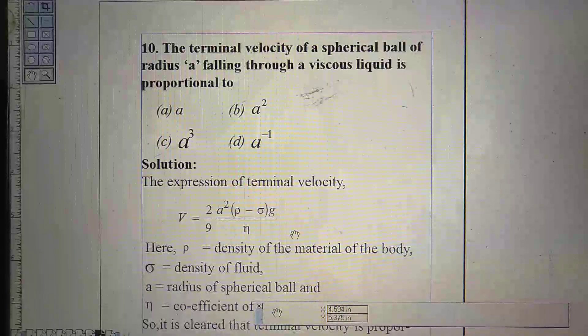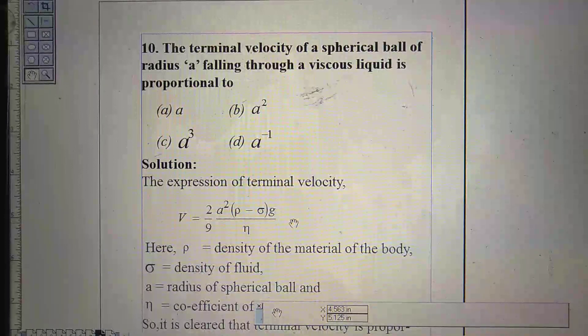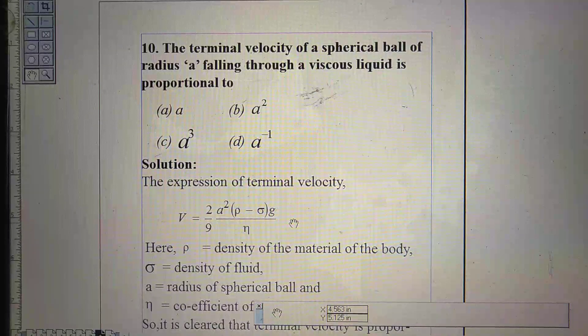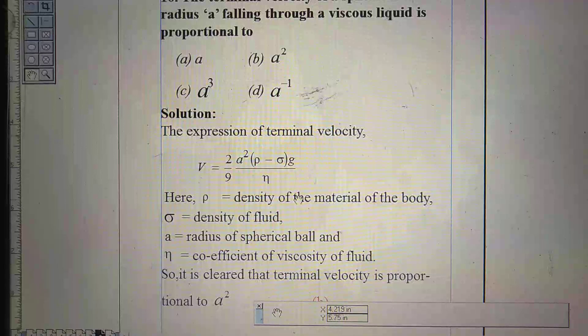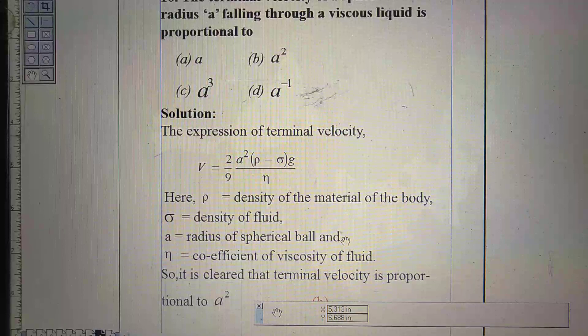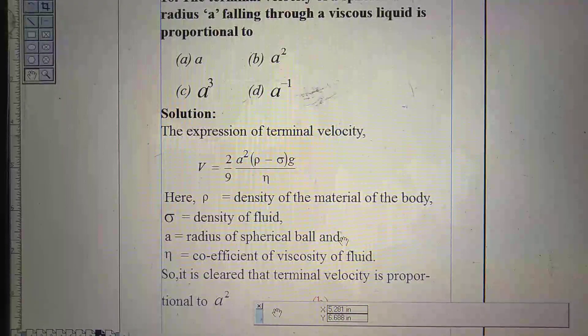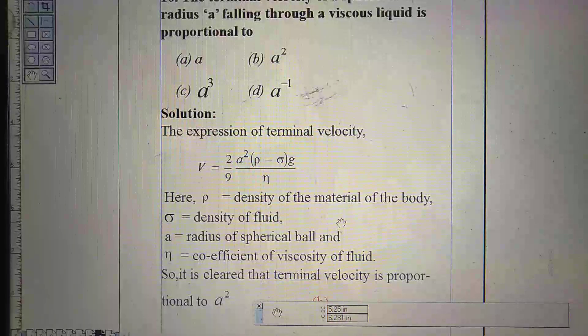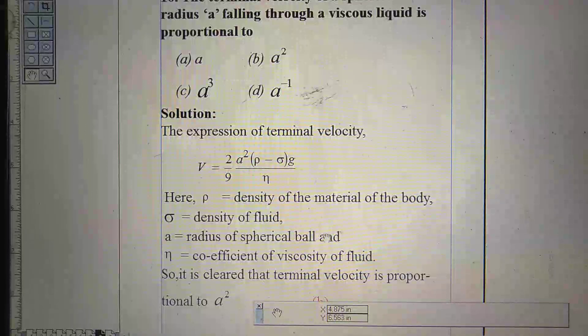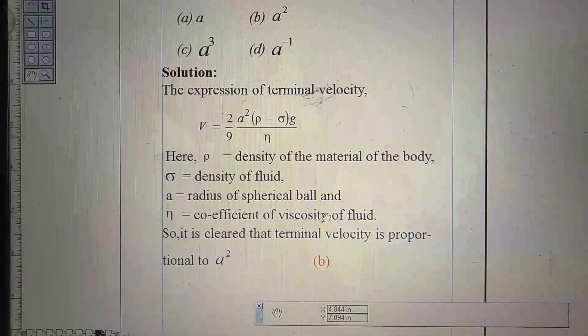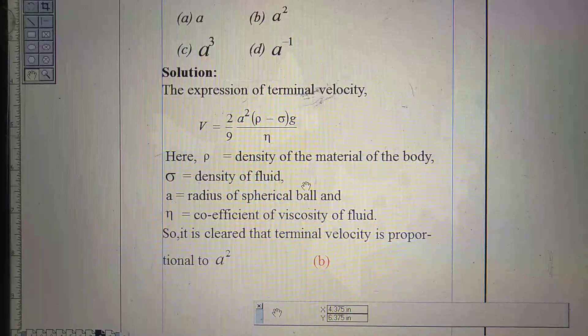How can we solve this one? We have to know the formula of terminal velocity. The expression is V equal to 2 by 9 A square times rho minus sigma into G divided by eta. Here, rho is the density of material of the body moving in the fluid. Sigma is the density of the fluid. Small a is the radius of the spherical ball. And eta is the coefficient of viscosity of the fluid.